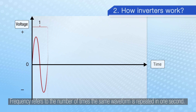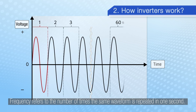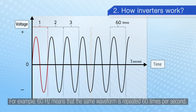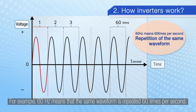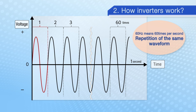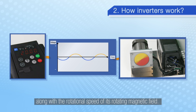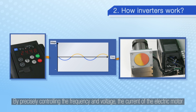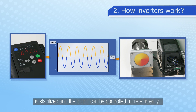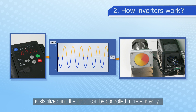Frequency refers to the number of times the same waveform is repeated in one second. For example, 60 Hertz means that the same waveform is repeated 60 times per second. As the frequency and voltage change, the motor's rotational speed changes along with the rotational speed of its rotating magnetic field. By precisely controlling the frequency and voltage, the current of the electric motor is stabilised and the motor can be controlled more efficiently.